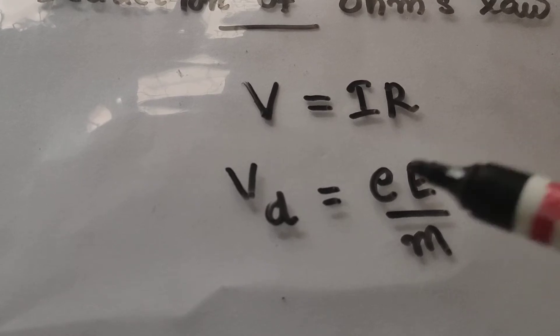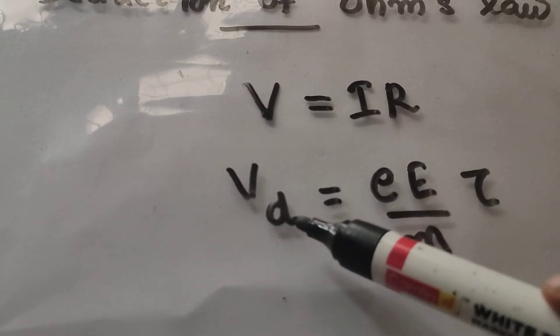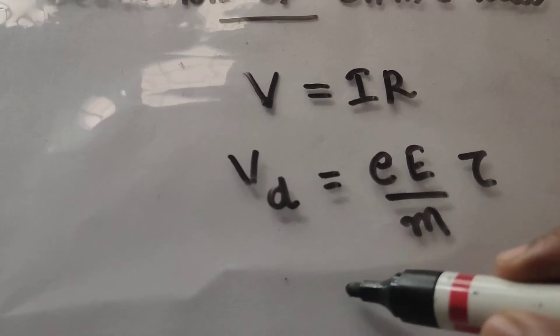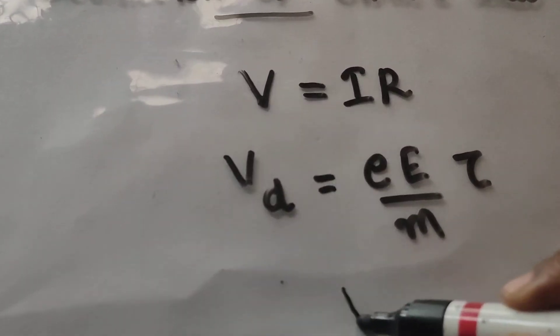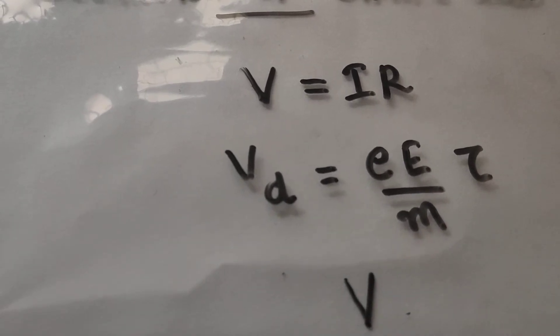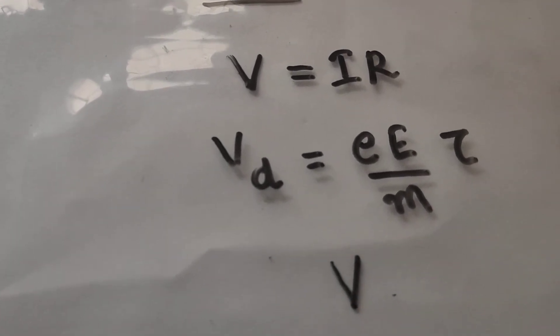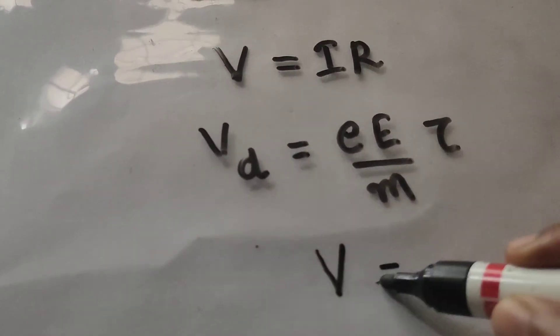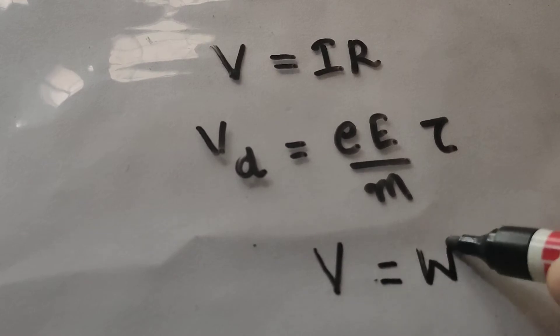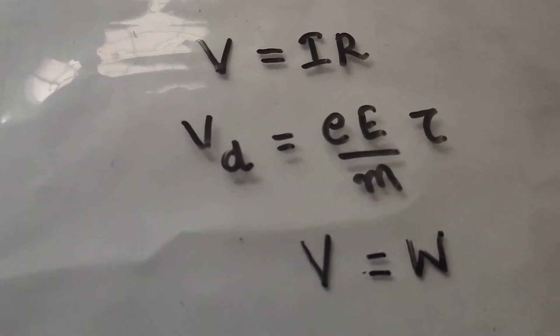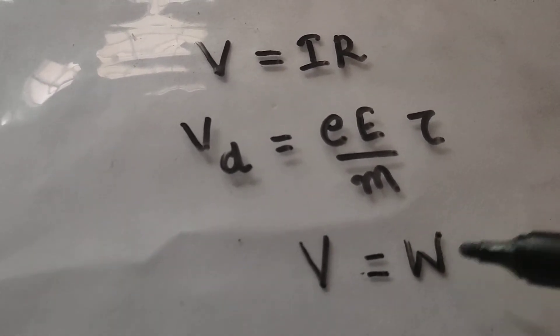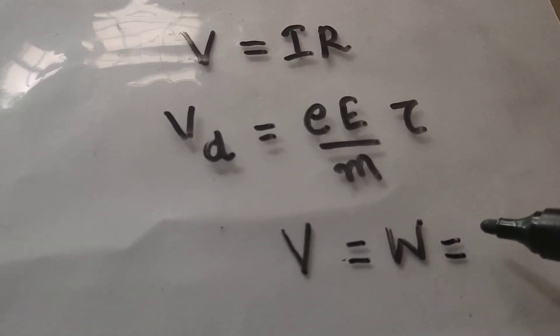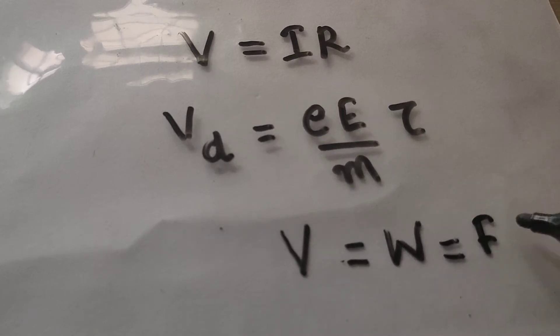Then, how can we write this drift velocity in terms of potential difference? For that, we can consider this equation V. V means potential difference. How do we define potential difference? Potential difference is equal to the work done in order to move a charge from one point to another point. So, it is equal to work W. W is equal to force into displacement.